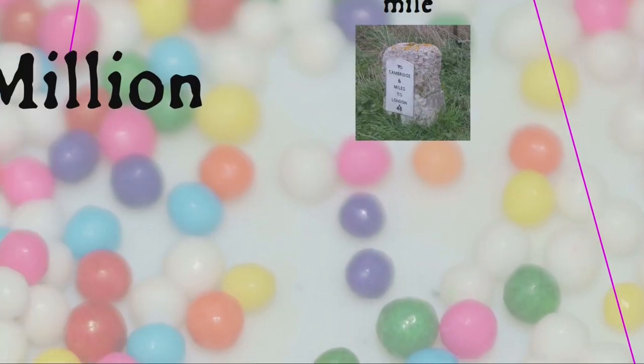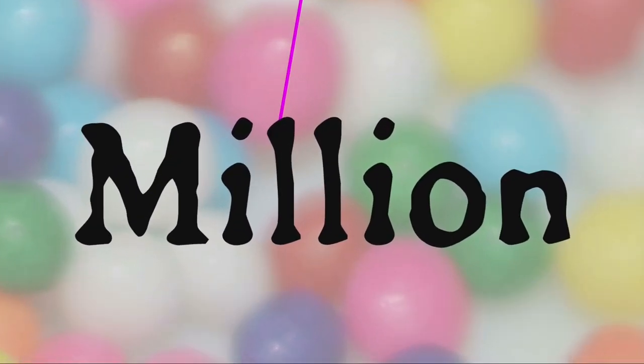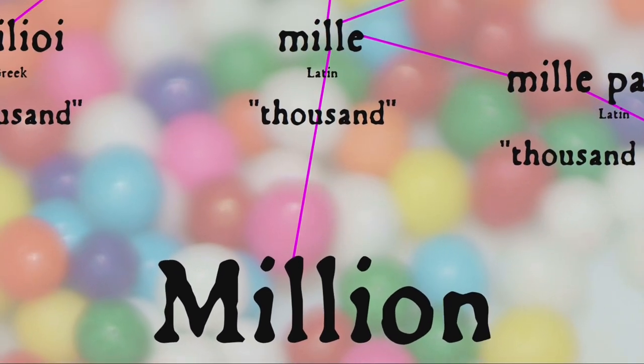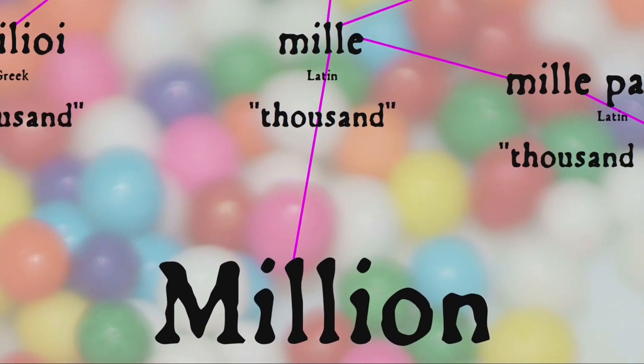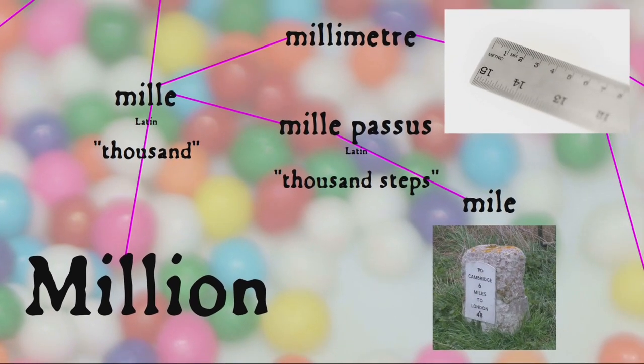A similar kind of number inflation happened with the word million. Million comes from Latin 'mille', meaning thousand, but with the addition of a suffix for emphasis it increased in size to a thousand thousands. From Latin 'mille',